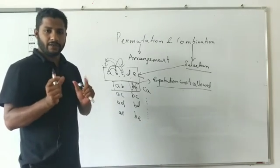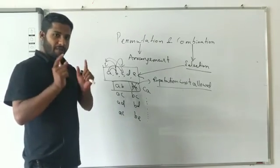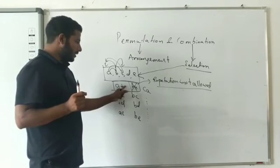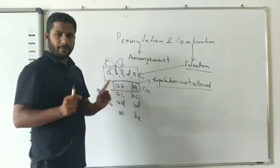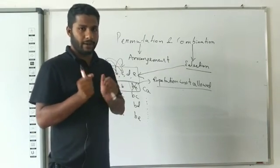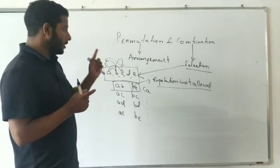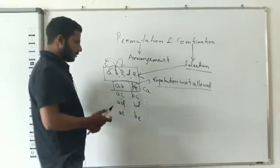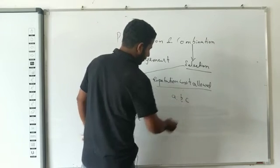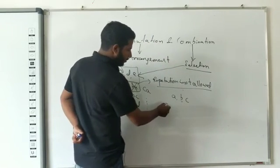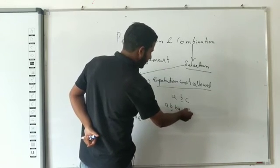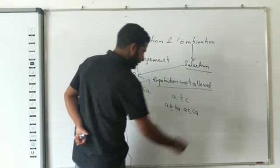In combination, we cannot accept repetition. But if you arrange a sequence — suppose with A, B, C — then you write A-B-C, then B-A-C, then C-C-A, and various other orders. In permutation, the arrangement of the same elements in different orders counts as different.